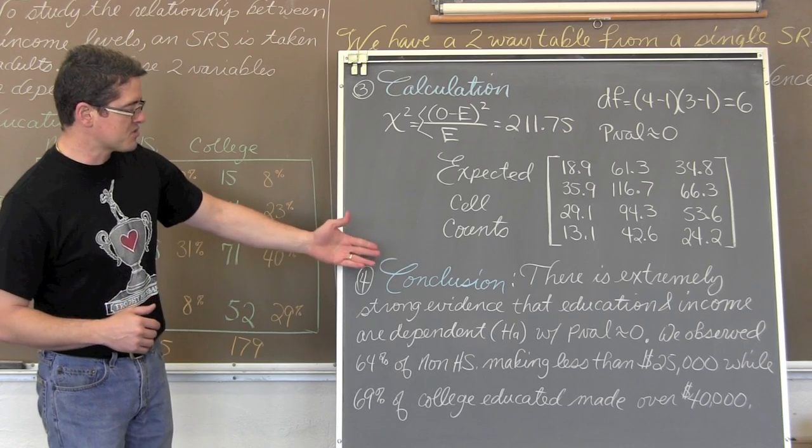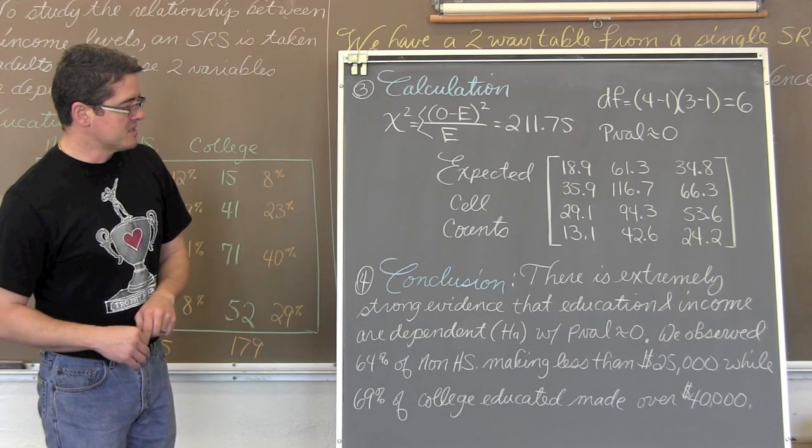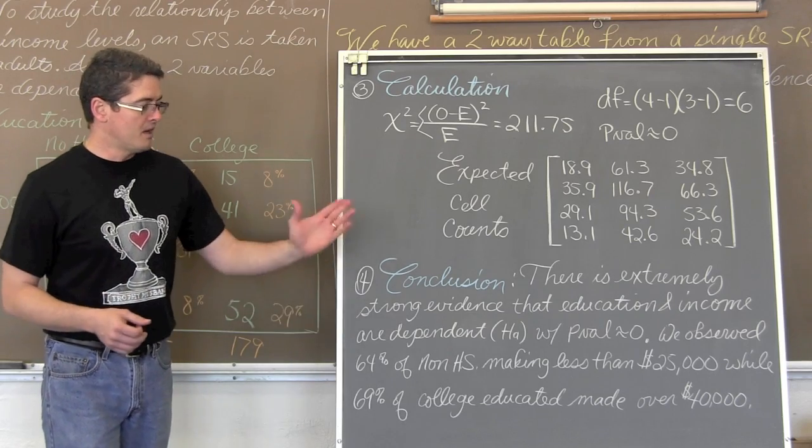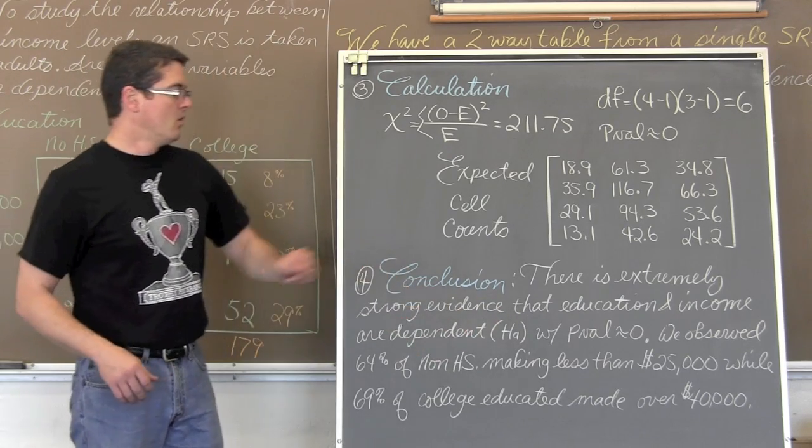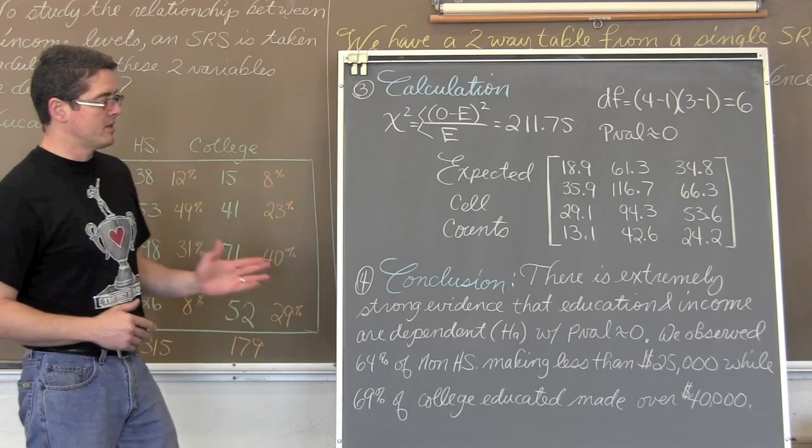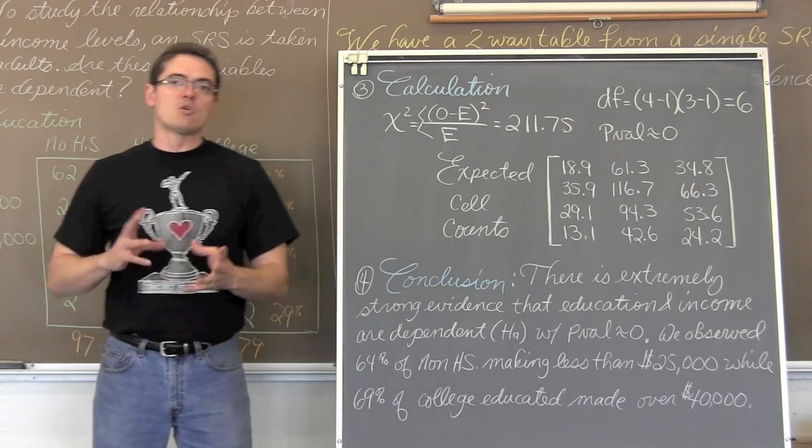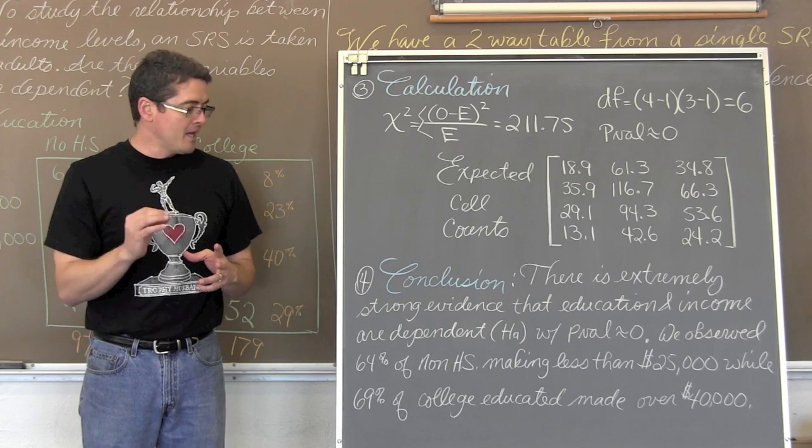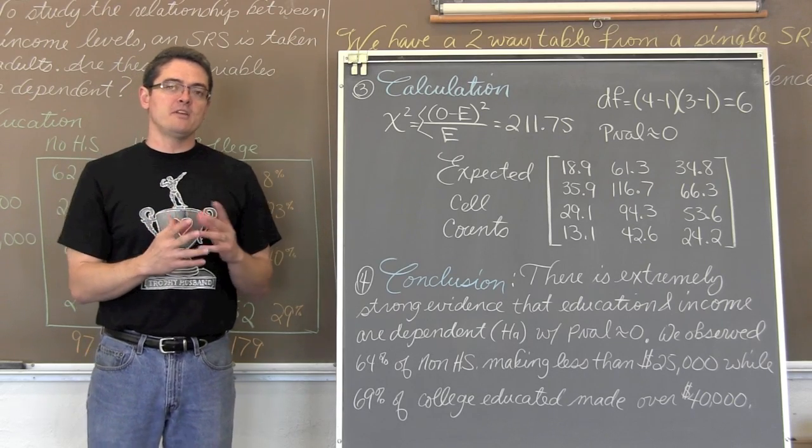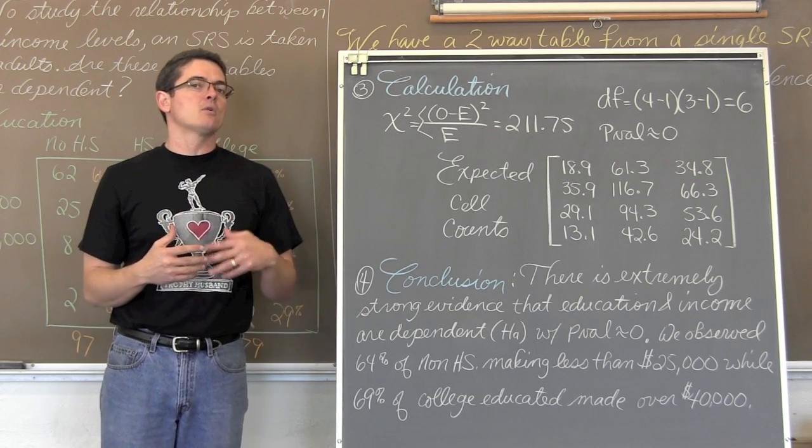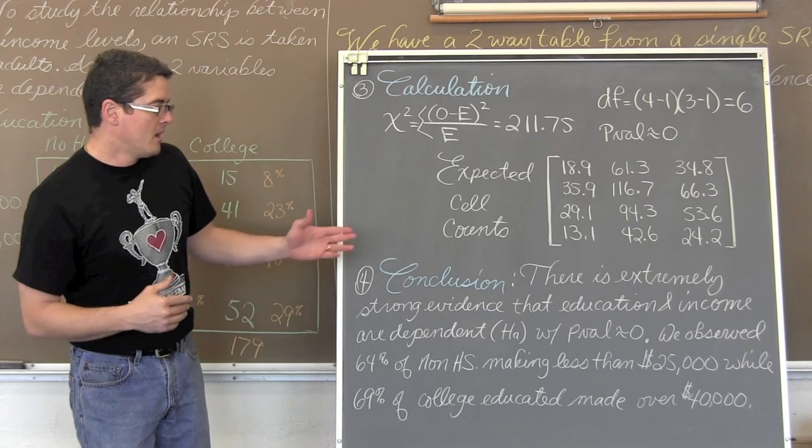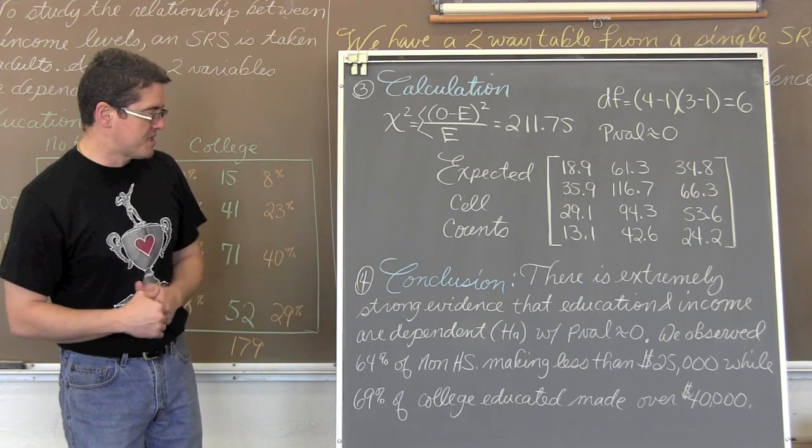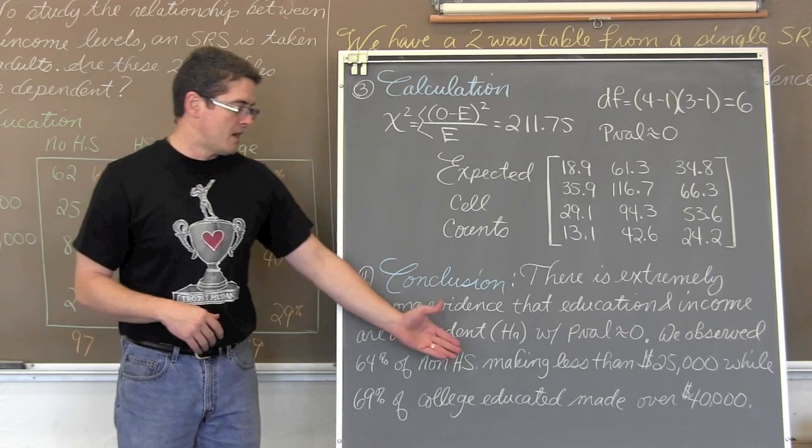Conclusion. There is extremely strong evidence that education and income are, of course, dependent. Thus, I have very strong evidence for Ha. With the p-value of near zero, notice my conclusion is incorporating my p-value and referencing whether I am feeling there is evidence for Ha or not for Ha. We observe 64% of non-high school individuals...